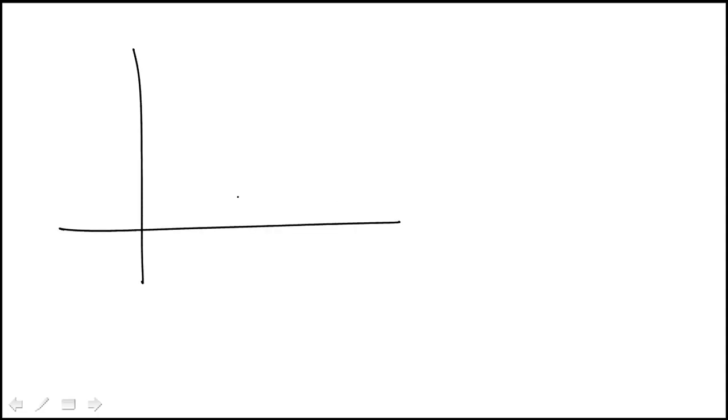So in this question, we're told that the region below the curve Y equals X, that's your straight line going through the origin at 45 degrees, from the origin to X equals B, so that's a triangle.